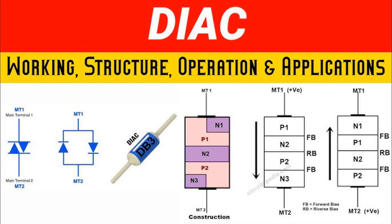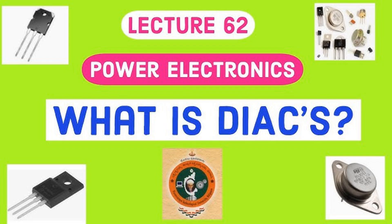Conduction: after breakdown, current flows through the DIAC, and it remains in a low-impedance state until the current drops below the holding current. Turn off: when the current falls below the holding current, the DIAC returns to its non-conductive state, awaiting the next half cycle.